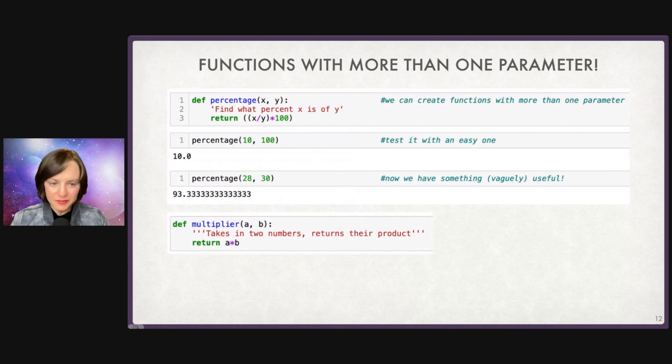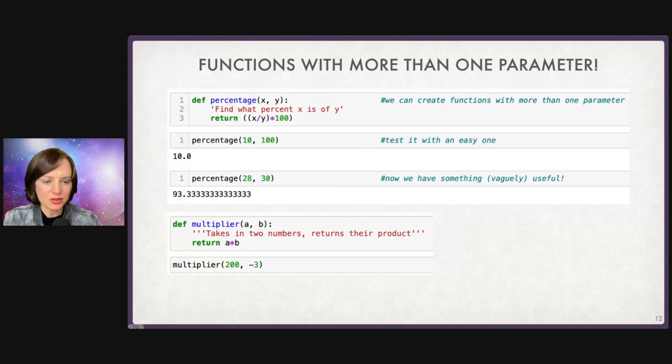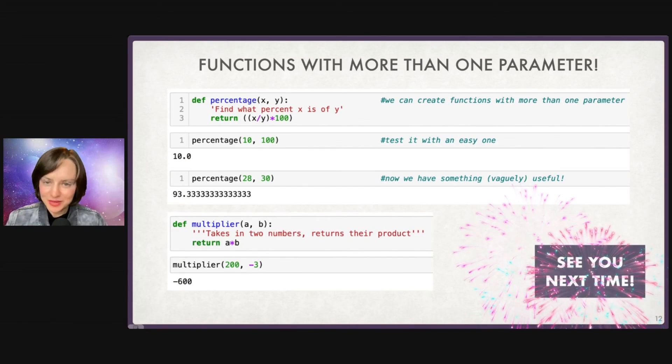We can define another one. Let's call it multiplier A comma B takes in two numbers, returns their product, return A times B multiplier, 200 minus three minus 600. Pretty straightforward. Again, they can get very complicated, but for now, make sure you're super comfortable with creating the ones that I've shared and try out creating some of your own with one parameter, two parameters, maybe even more than two. See how it goes. I will see you in the next video.